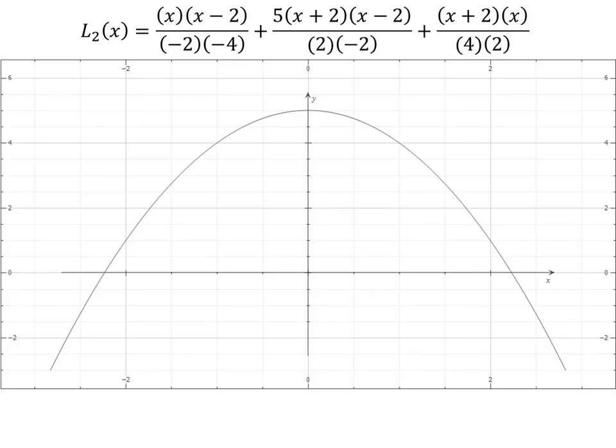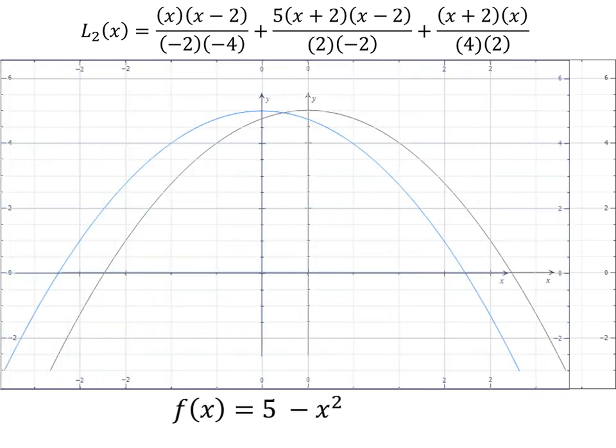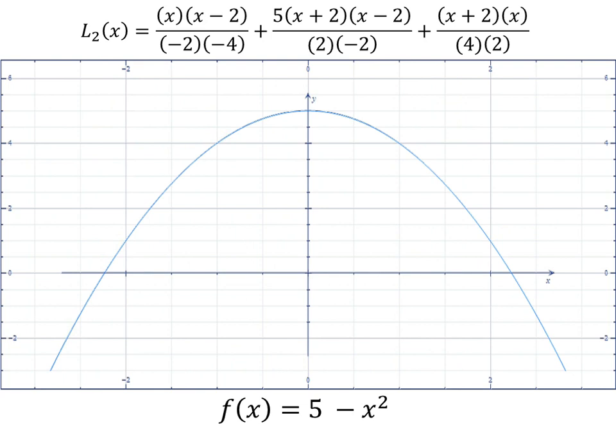Now if we try to graph this Lagrange polynomial, we'll come up with a graph that looks like this, where if we overlap our original function, they overlap exactly. So in this case our Lagrange polynomial ended up being exactly equal to our original function, but that's not always going to be the case.